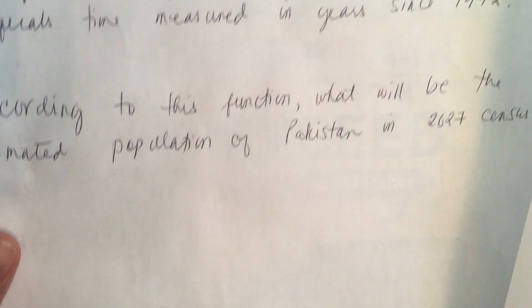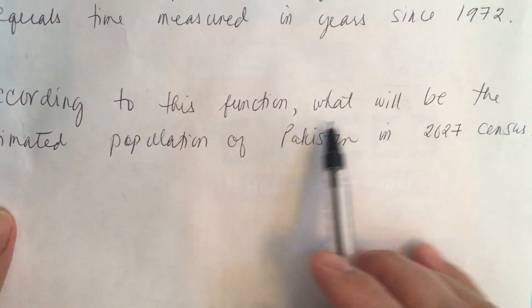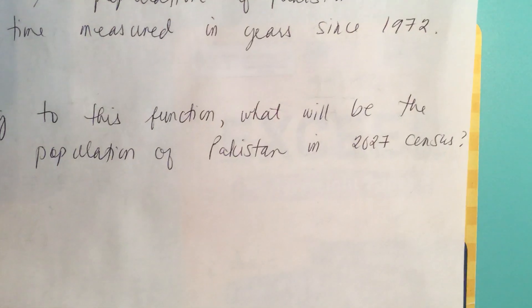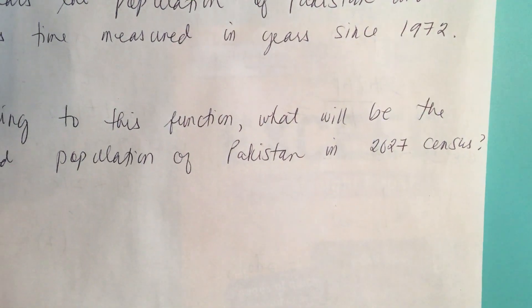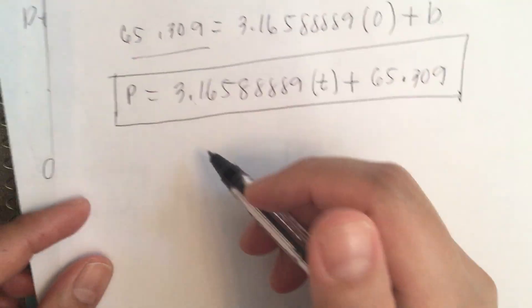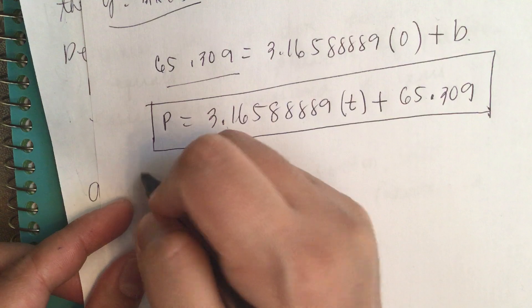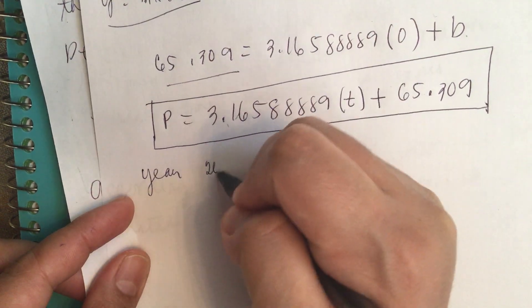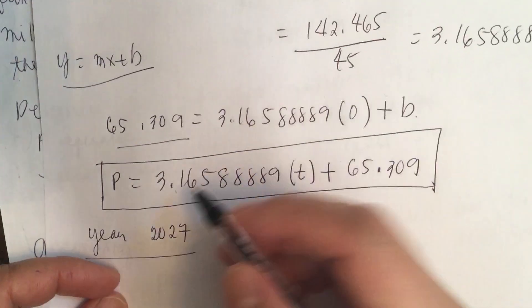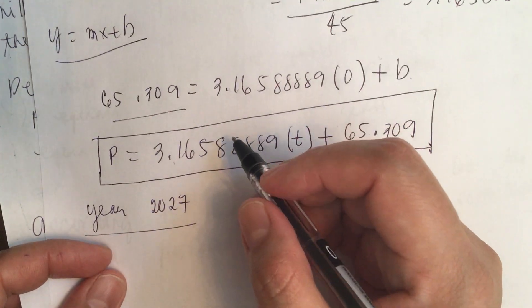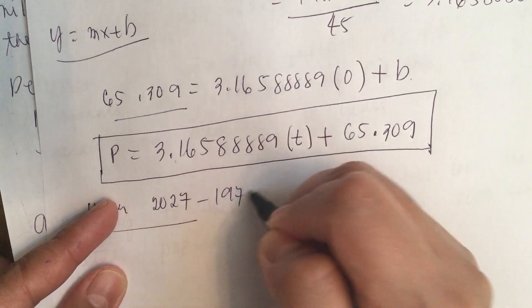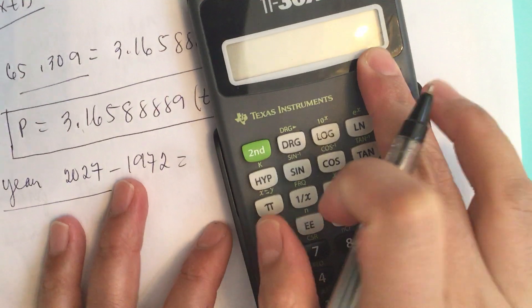According to this function, what will be the estimated population of Pakistan in 2027 census? In 2027, they started the census in 1972. Year 2027 minus 1972 is how many years?